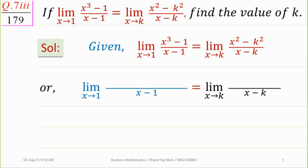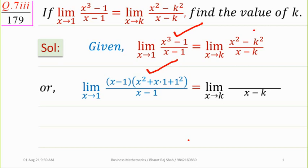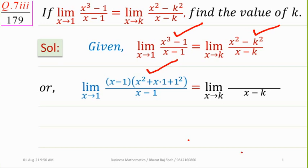If we put x = 1 directly into the LHS limit, we get 0/0, so we cannot substitute directly. Instead, we factorize the numerator using the formula a³ - b³ = (a - b)(a² + ab + b²). On the RHS, we will also factorize the numerator.